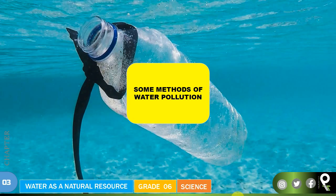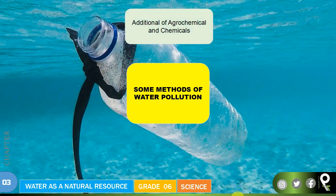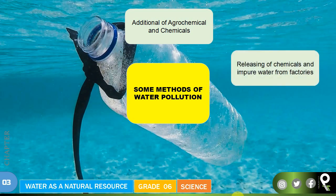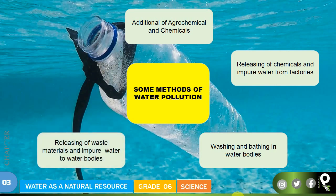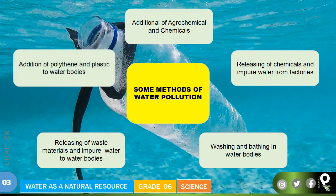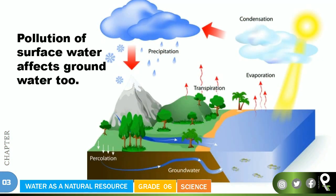So some methods of water pollution are: addition of agrochemicals and chemicals, releasing of chemicals and impure water from factories, washing and bathing in water bodies, releasing of waste materials and impure water to water bodies, and addition of polythene and plastic to water bodies. Now you know some of the methods by which water gets polluted.